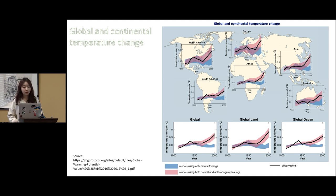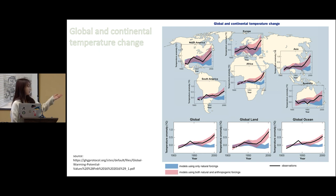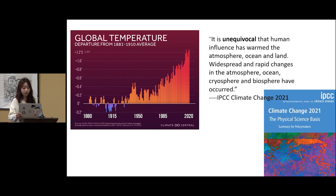As we all know, climate change has become one of the greatest challenges and threats to human development. The earth's average temperature has increased by approximately 1.1 degrees Celsius since the late 19th century, as we can see in the chart. This is a quote from IPCC Climate Change 2021: it is unequivocal that human influence has warmed the atmosphere, ocean, and land, and widespread and rapid changes in the atmosphere, ocean, cryosphere, and biosphere have occurred.